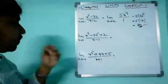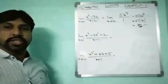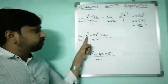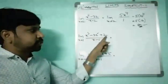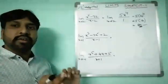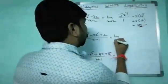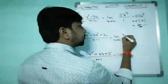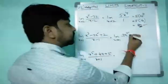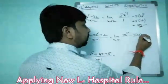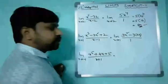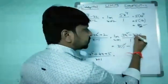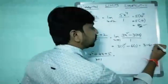Second example: limit x tends to 1, (x³ - 3x² + 2) / (x² - 2x + 1). Substituting x = 1: 1 - 3 + 2 = 0 in the numerator and 1 - 2 + 1 = 0 in the denominator. This is 0/0 form, so we apply L'Hospital's rule. Derivative of numerator: 3x² - 6x; derivative of denominator: 2x - 2. Substituting x = 1: (3 - 6) / (2 - 2)... wait, substituting: 3(1) - 6(1) = -3 over 2(1) - 2 = 0...